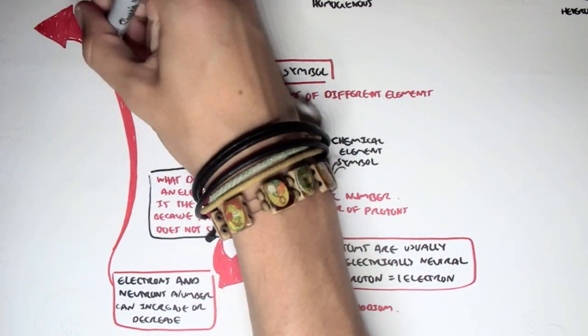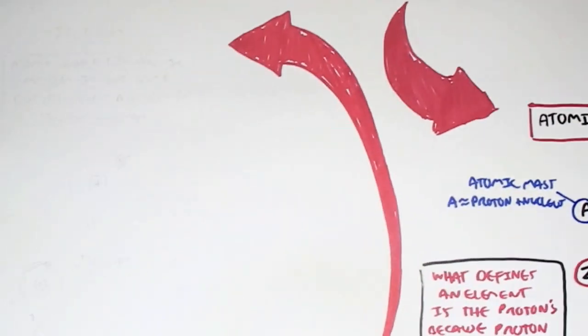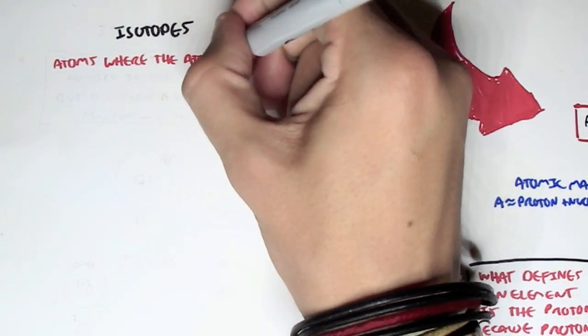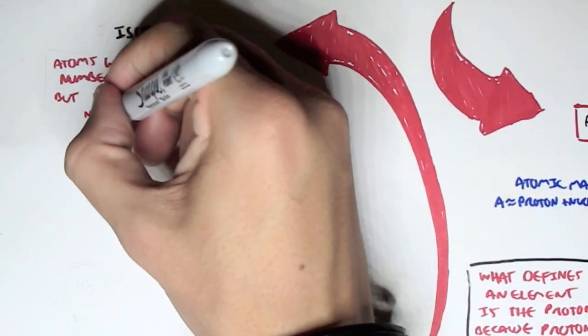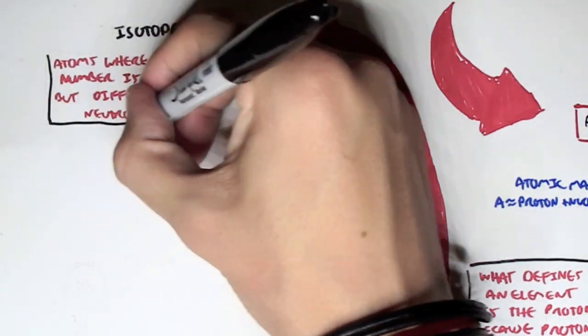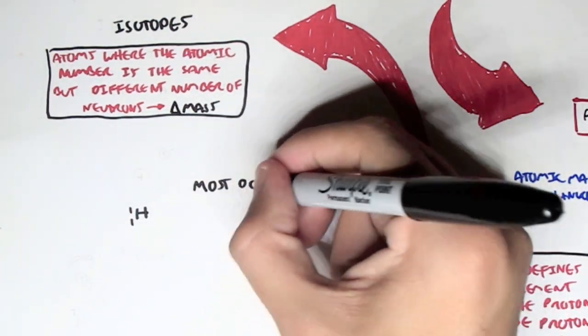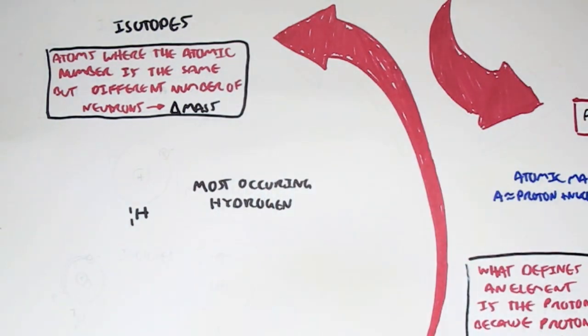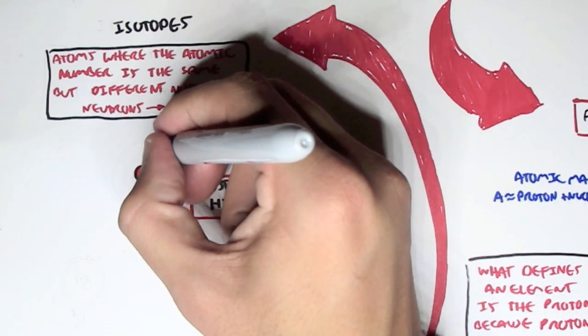And when the number of neutrons decreases or increases, this is where we have isotopes of a particular element. So an isotope is where atoms, where the atomic number is the same, the number of protons is the same, but different number of neutrons. And so this also changes the mass of the whole atom. So a good example of this is hydrogen. Hydrogen 1 is the most occurring hydrogen we have on Earth. So we have H1, the atomic mass is 1, and the atomic number is 1. So what this means is that we only have one proton and one electron. There are no neutrons.